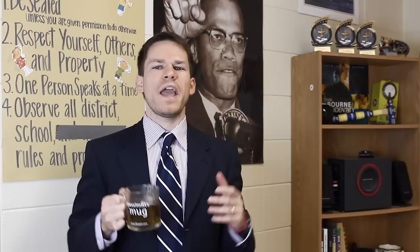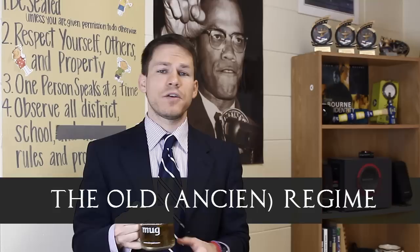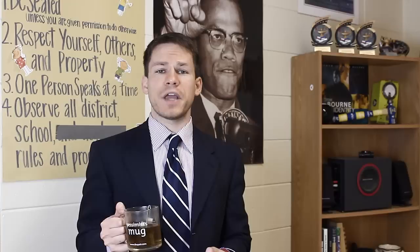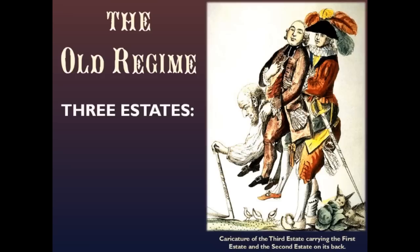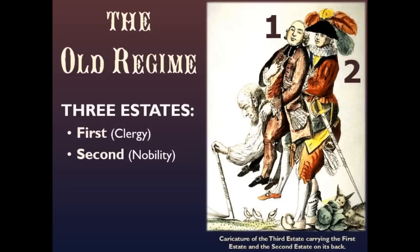Let's first look at what historians call the old regime, which is the way that things were before the French Revolution. Before the French Revolution came about, the population of France was divided into three estates: the first estate being the clergy, the second estate being the nobility, and the third estate being everyone else, which was about 97% of the population.